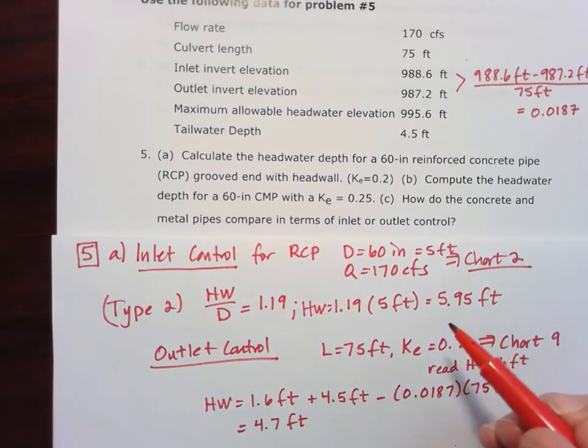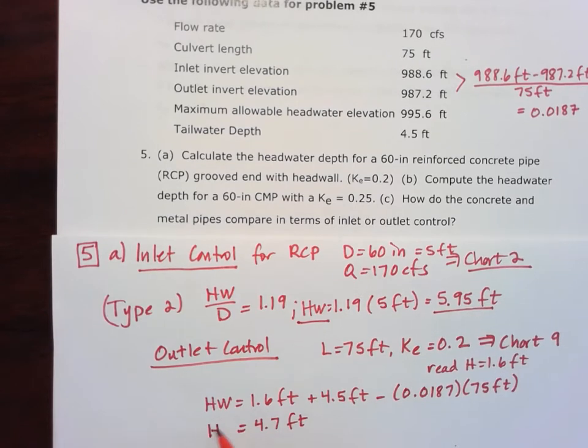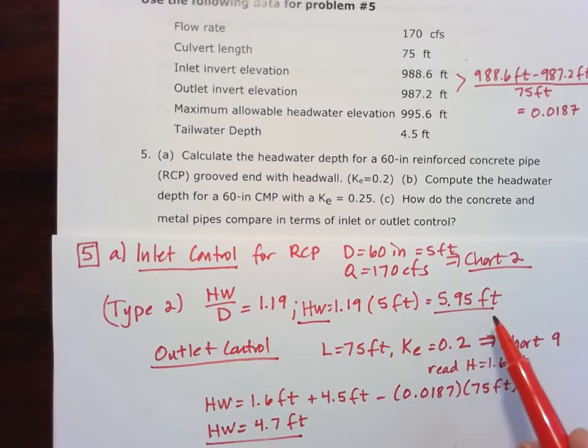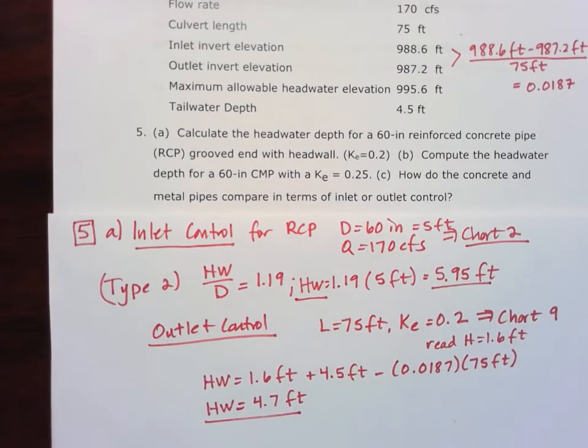So that is for my outlet control for my reinforced concrete pipe. In this case, I compare my HW for inlet control, my HW for outlet control. Inlet control is bigger, so inlet control is going to govern in this first case. Let's go ahead and check it for our second type of pipe here for corrugated metal pipe and see how those two compare.